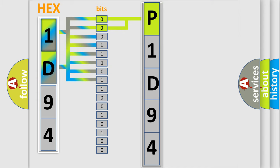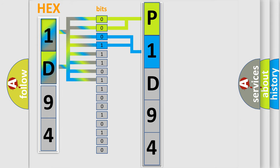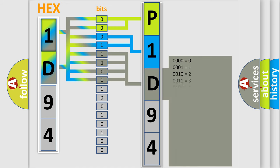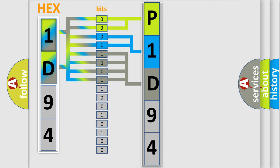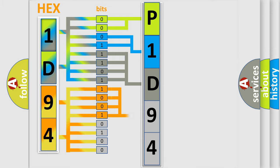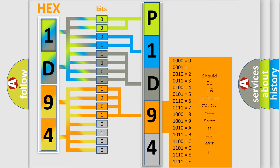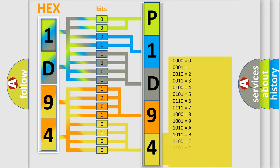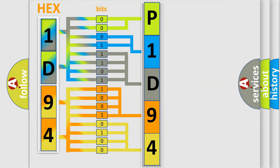The next two bits determine the second character. The last bits of the first byte define the third character of the code. The second byte is composed of a combination of eight bits. The first four bits determine the fourth character of the code, and the combination of the last four bits defines the fifth character. A single byte conceals 256 possible combinations.